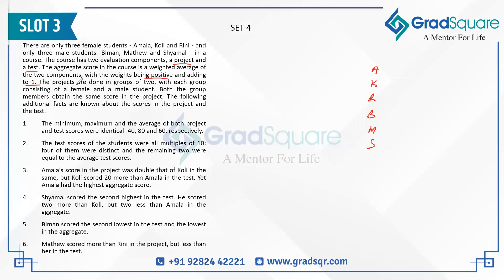Projects are done in a group of two, with each group consisting of a female and a male student. Both group members obtain the same score. So if A and S are working together on a project, they get the same score. Similarly, if K and M are working together, they get the same score on the project.